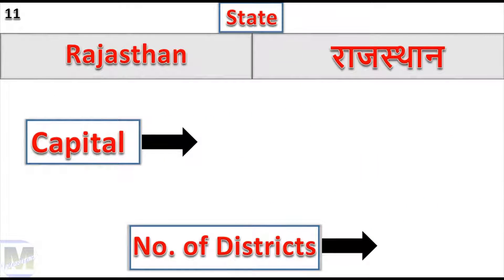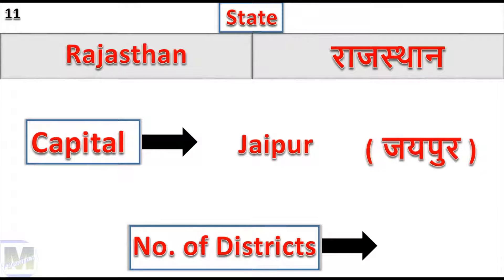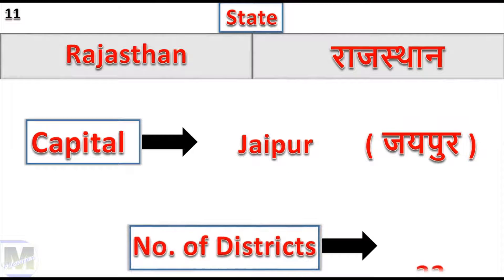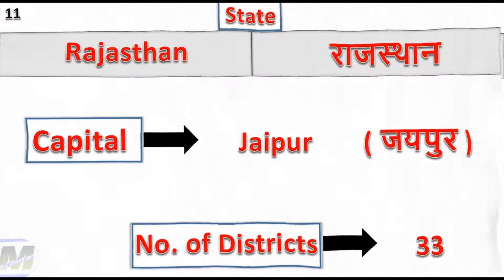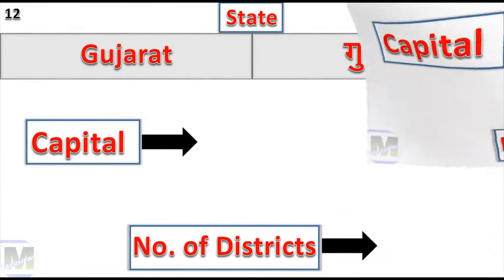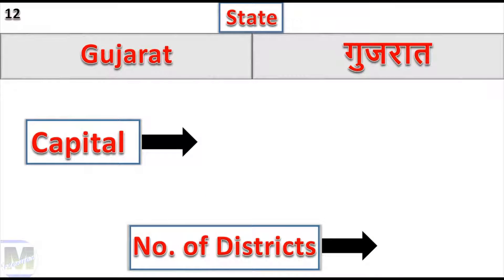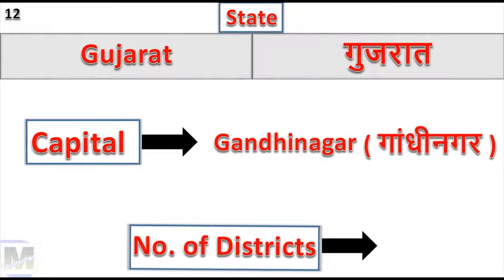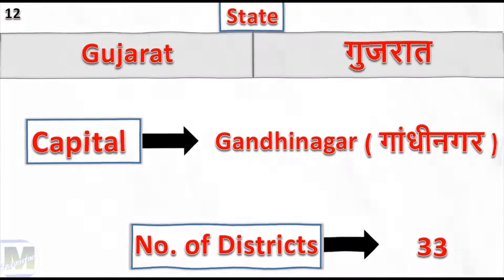Rajasthan: Capital Jaipur, Number of Districts: 33. Gujarat: Capital Gandhinagar, Number of Districts: 33.